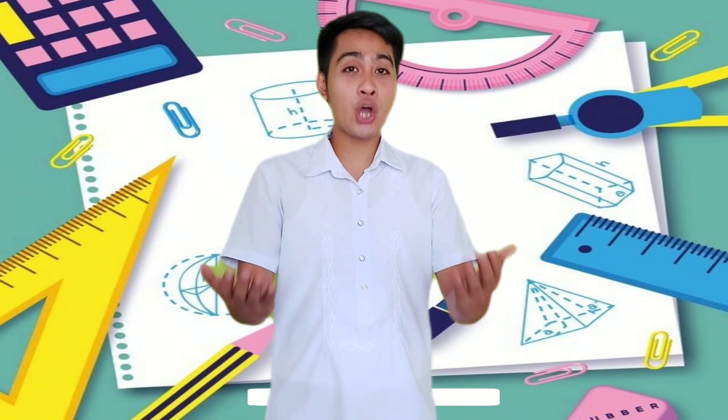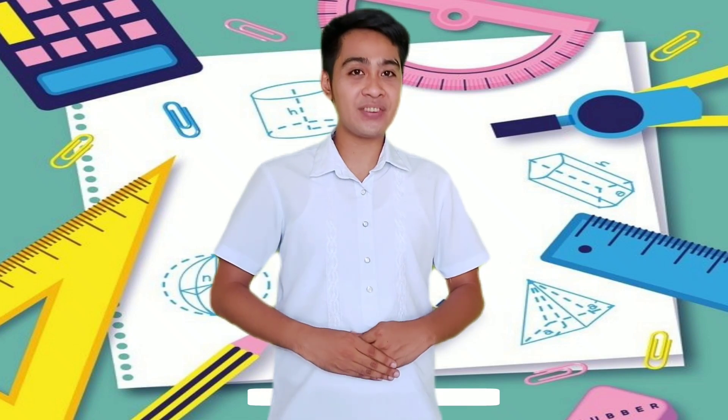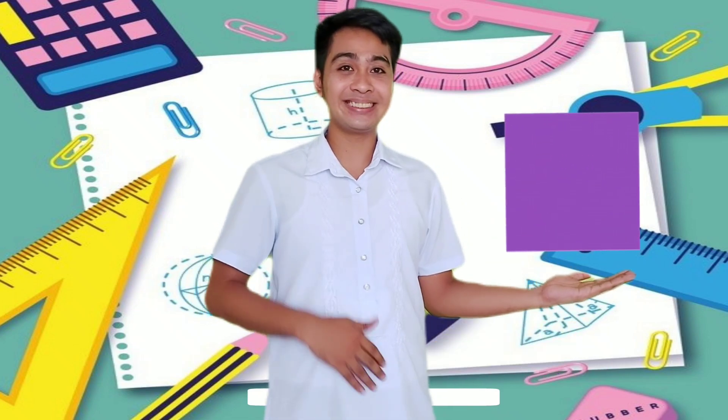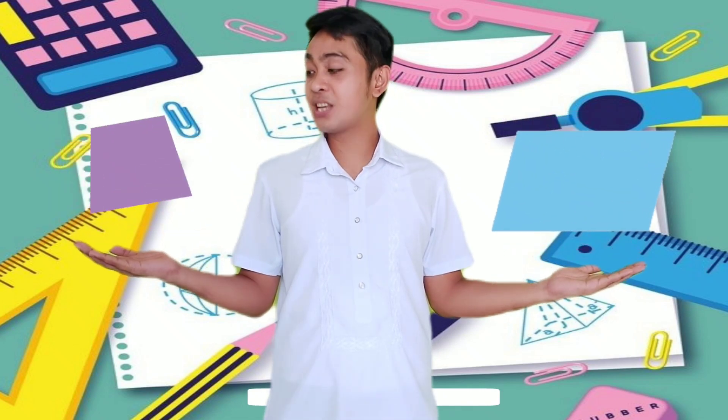In this video, you are going to identify and describe the different kinds of quadrilaterals: the square, rectangle, parallelogram, trapezoid, and rhombus.